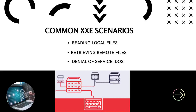We will talk about the common XXE scenarios. There are three common scenarios in which XXE attacks occur. The first is reading local files — attackers use XXE to read sensitive files from the server's file system. Then we have retrieving remote files, where attackers fetch data from external servers using XXE references. And lastly, denial of service, where XXE can be used to overload the system's resources, leading to a denial of service attack.